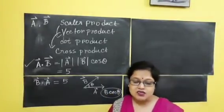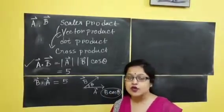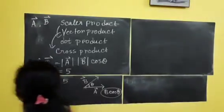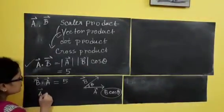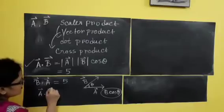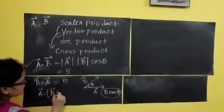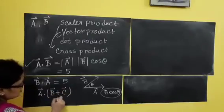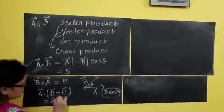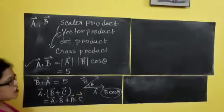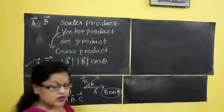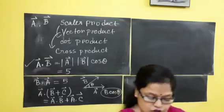The next property is that scalar product is distributive. Distributive property means that A dot (vector B plus vector C) can be written as A dot B plus A dot C. So vector scalar product is also distributive.